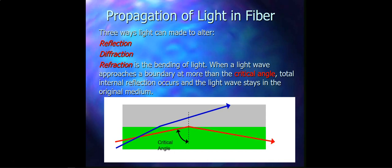The light waves in fiber optics tend to move in a straight line unless something interferes with it. And there are three ways by which this light wave in fiber optics can be altered. These three methods are reflection, diffraction, and refraction. In reflection, to make a good optical reflector, it requires a polished conducting surface. Some fiber optics do not rely on reflection.